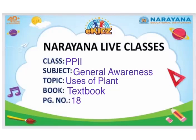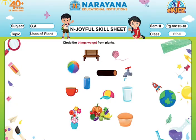Hello children, I hope you all are fine. Our today's subject is General Awareness and the topic is uses of plants. Everybody open your General Awareness textbook page number 18. What you have to do is circle the things we get from plants.